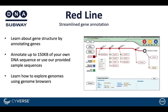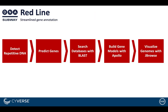DNA Subway Redline is a streamlined workflow for gene annotation, where you can work up to 150 kilobases of your own DNA sequence or use provided sample sequences. It allows you to explore genomes using genome browsers, detect repetitive DNA, predict genes, search databases with BLAST, build gene models with Apollo, and visualize genomes with JBrowse.